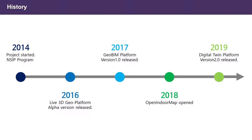Last year we launched the Open Indoor Map site — a kind of Dropbox-type website. You can upload your IFC file, CityGML file, or IndoorGML file to the web page, and the system automatically visualizes your files through the web. This July, just one month ago, our colleagues released version 2.